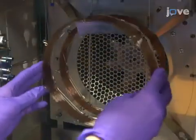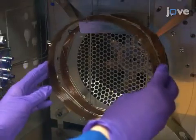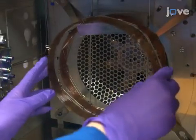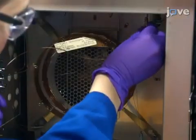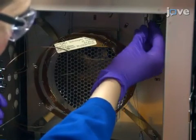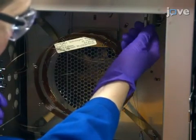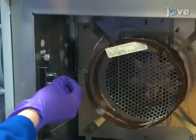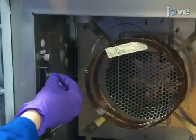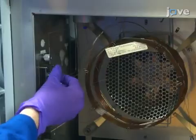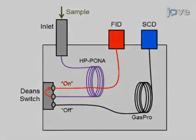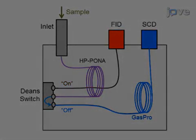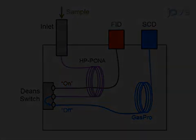Then install the PLOT column between the Dean Switch and the sulfur chemiluminescence detector. Finally, install the restrictor tubing between the Dean Switch and the FID. The Dean Switch is controlled by a valve in the gas chromatograph.